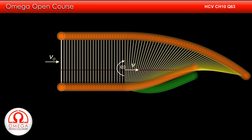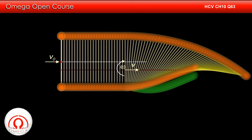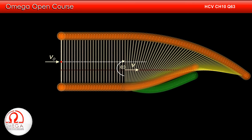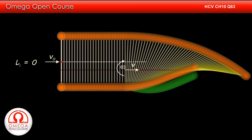Let us take any point on the line of motion of the midpoint of the rod. Initially, the ball-rod system is undergoing pure translation, and the perpendicular distance of the line of motion of the center of mass from our reference point is zero. Therefore, the initial angular momentum of the system about this point is zero.